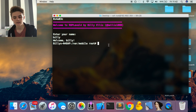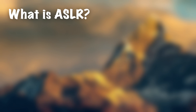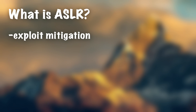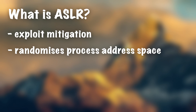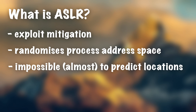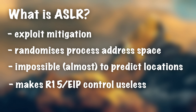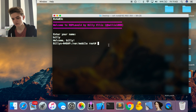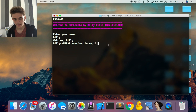ASLR stands for Address Space Layout Randomization. It's an exploit mitigation used to randomize the process address space of a program while it's running. It's designed to make it impossible for an attacker to know where anything is in the program at runtime. This makes control of the program counter or EIP essentially useless — even if you do a stack buffer overflow and take control of the program, you can't do anything because you don't know where anything is.